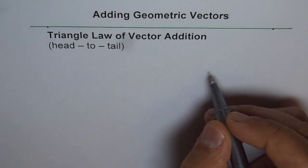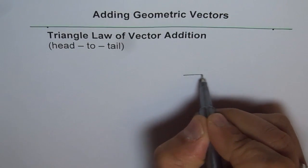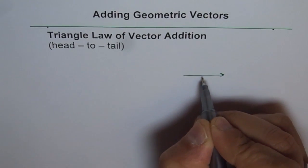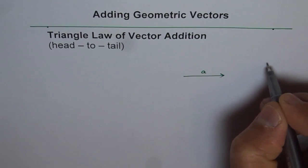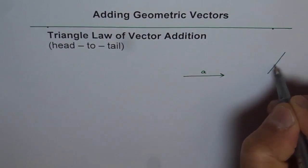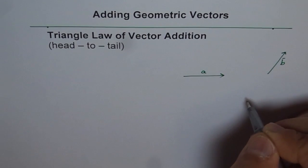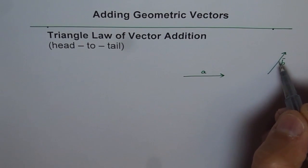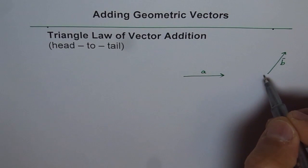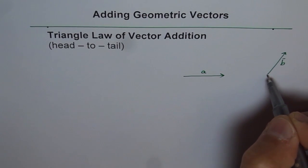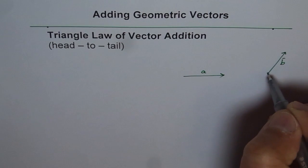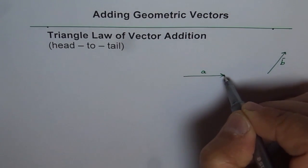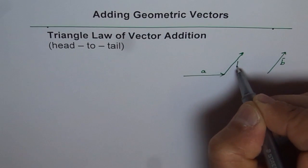Let's take an example. Let's say we have one vector — let's call this vector A — and we need to add vector B to it. So to add them, we place vector B so that the tail of vector B coincides with the head of vector A. We'll take vector B and draw a line parallel and of the same length, and that is our vector B here.